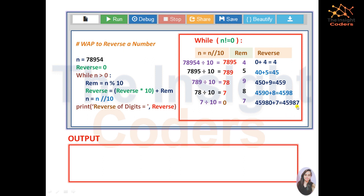Repeat this until unless you get the number n as 0. So finally we get the number as 45987, which is actually the reverse of this number 78954. So let's come to the logic.